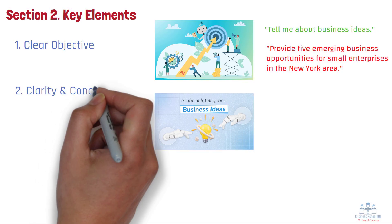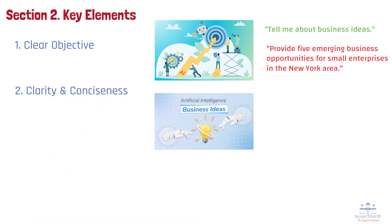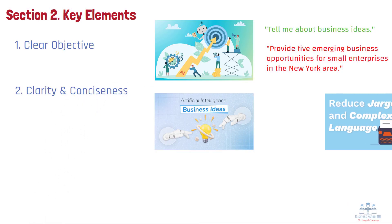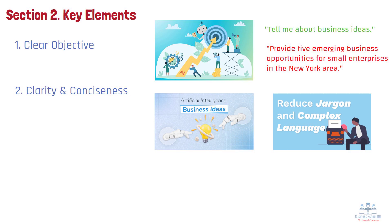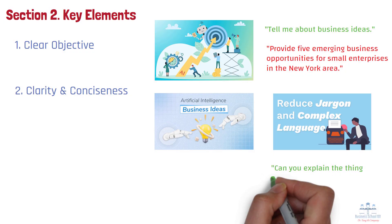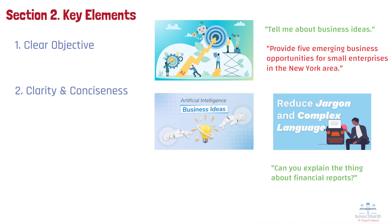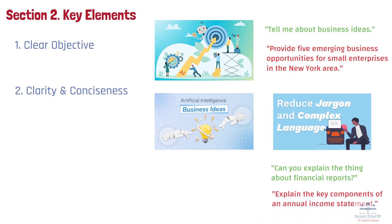Number 2: Clarity and Conciseness. Use precise and straightforward language in your prompt. Avoid unnecessary jargon or complex phrasing that could confuse the AI. For example, rather than saying 'can you explain the thing about financial reports,' you could ask 'explain the key components of an annual income statement.'